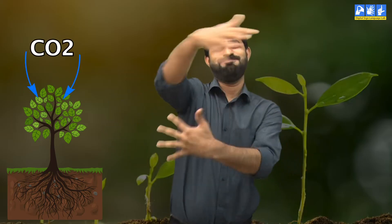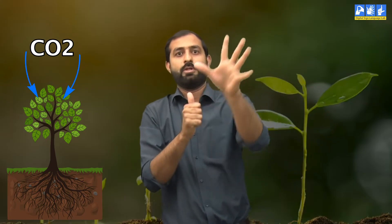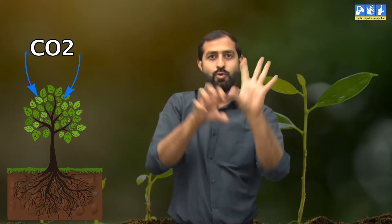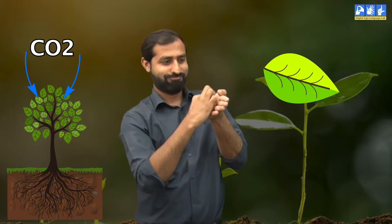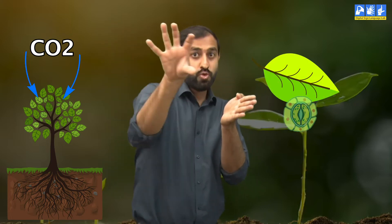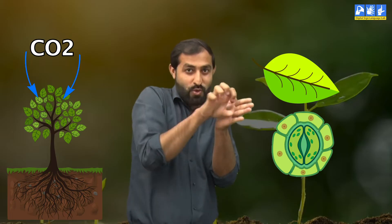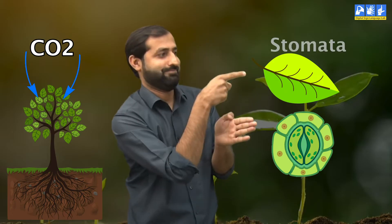During respiration, humans breathe out carbon dioxide and plants take in carbon dioxide from the air that surrounds them. Carbon dioxide is absorbed by plants through tiny pores called stomata.